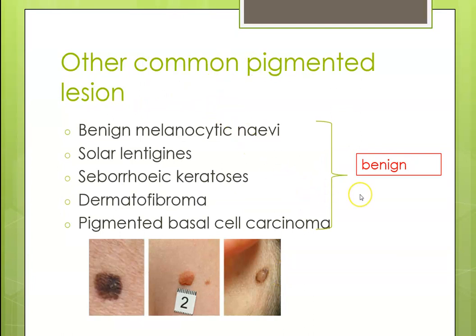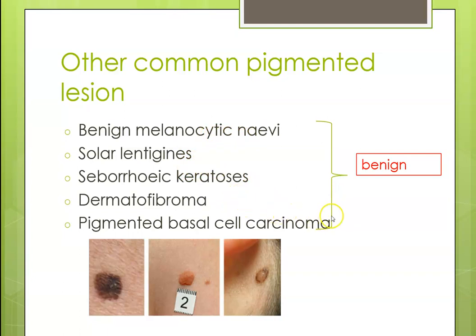Other common pigmented lesions that are benign include benign melanocytic nevi, solar lentigines, seborrheic keratosis, dermatofibroma, and even basal cell carcinoma can present as a pigmented lesion.